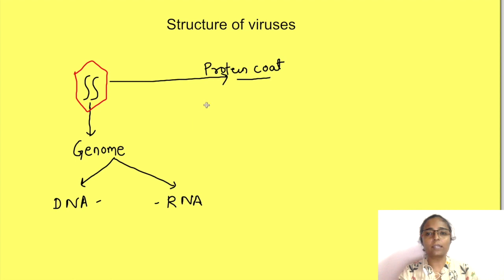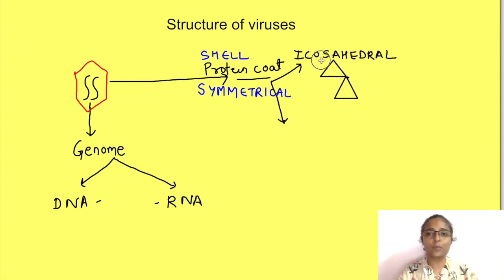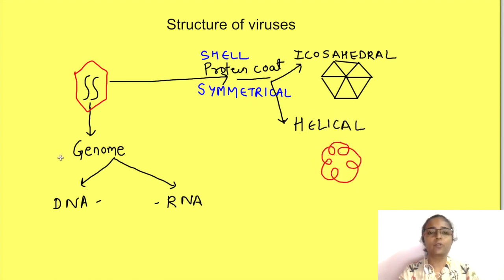The protein coat, that is the capsid, is basically proteins which are arranged in a symmetrical manner and form a protective shell for the nucleic acid. The symmetry may be either icosahedral, that is has 20 triangular faces, or it may be helical. So all viruses have a genome and a protein coat.